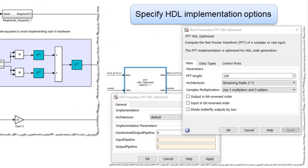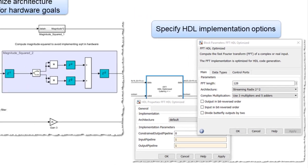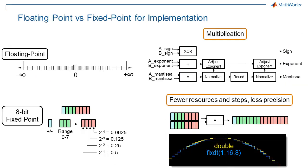A simpler example is choosing FFT implementation options. On the FFT block, you can set the radix, how to implement complex multiplication, and add pipeline stages. Targeting hardware typically requires fixed-point quantization to reduce resource usage. But this reduces precision, so there's an efficiency versus accuracy tradeoff that can become a time-consuming back-and-forth process. But we have a couple of approaches that help automate this process and drive it toward convergence, and this is another capability that we see customers adopt as a first step.